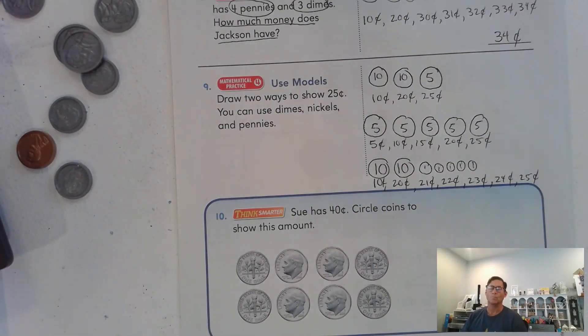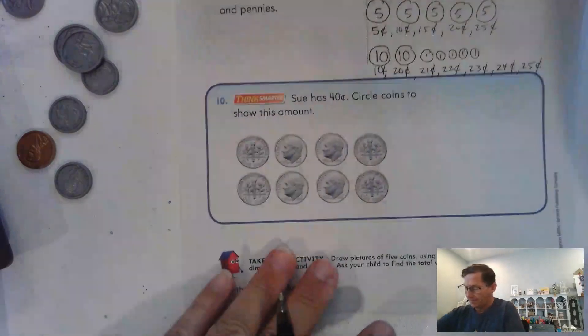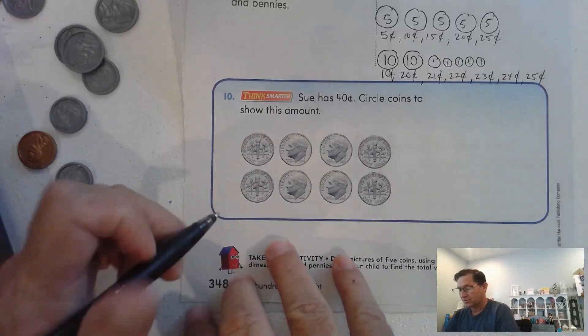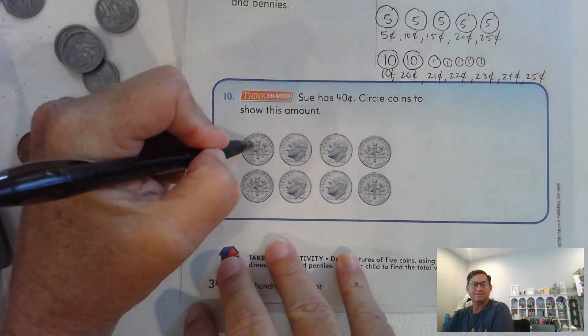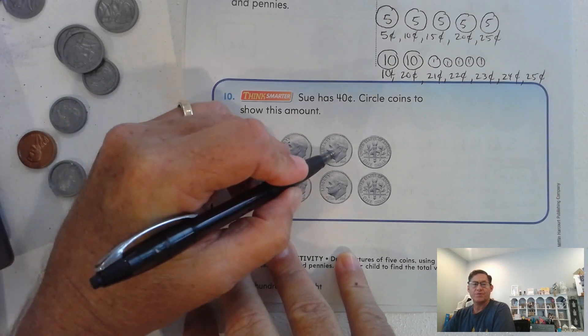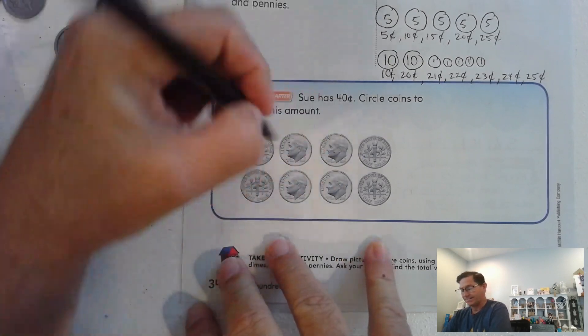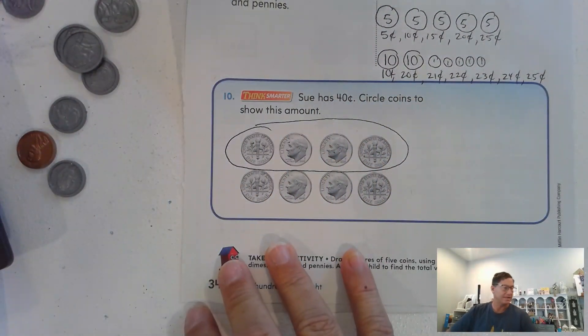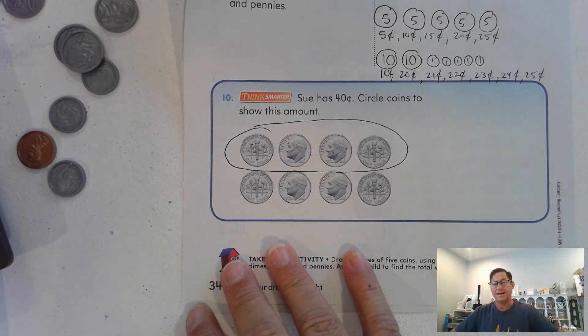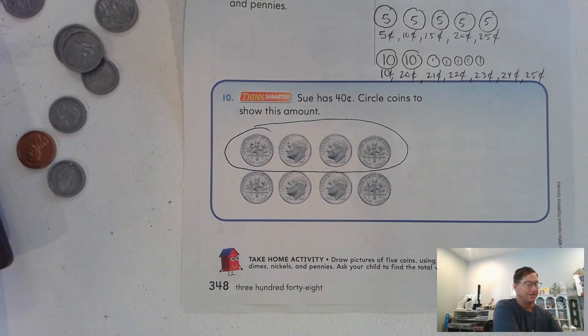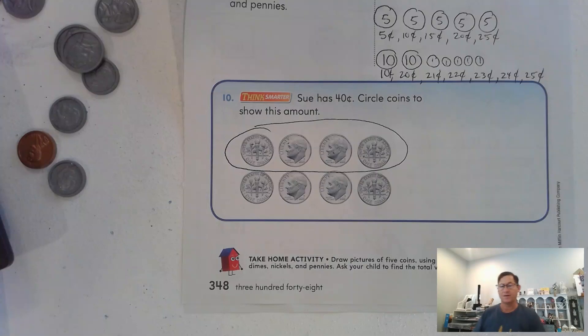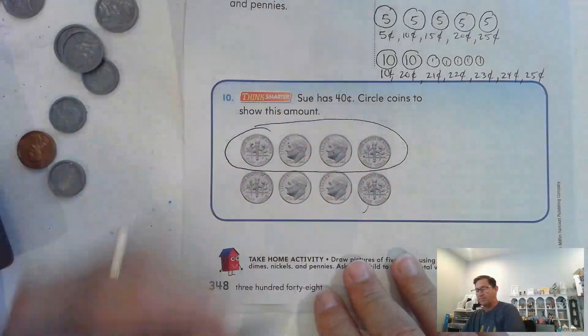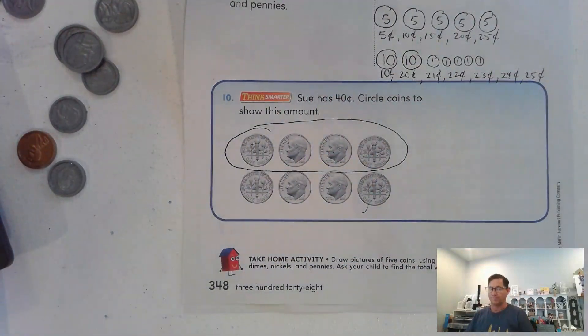Sue has forty cents. Circle coins to show this amount. Ten, twenty, thirty, forty. Basically, we need to circle four dimes, four out of the eight. There's eighty cents showing there. We're going to circle those four, any four.